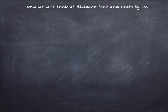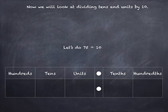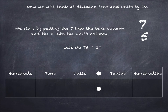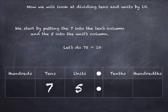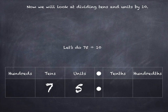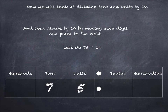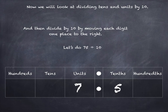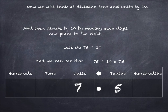Now what about if we are dividing tens and units by 10? Let's do 75 again but this time divide it by 10. Here's our grid, so we're going to put the 7 in the tens column and the 5 in the units column. Because we're dividing this time we'll be going to the right — moving both of those digits one place each to the right. There's no zero placeholder needed this time, and we can see that 75 divided by 10 is 7.5.